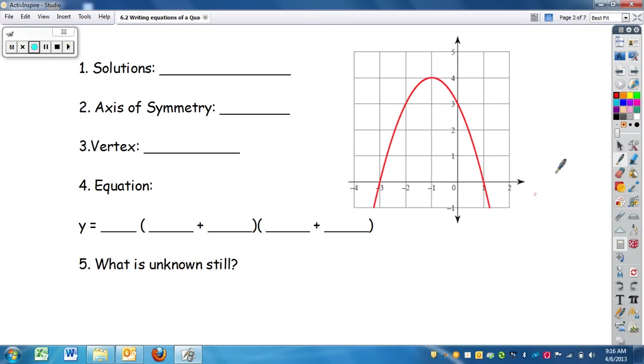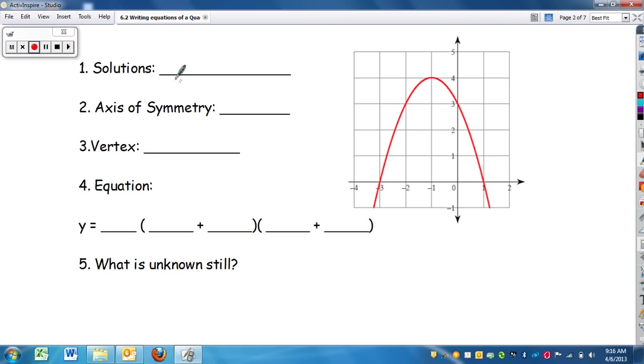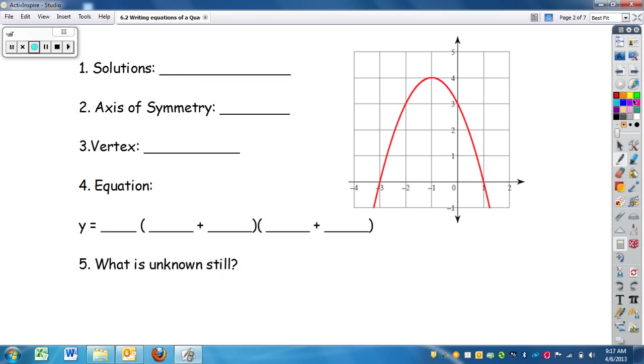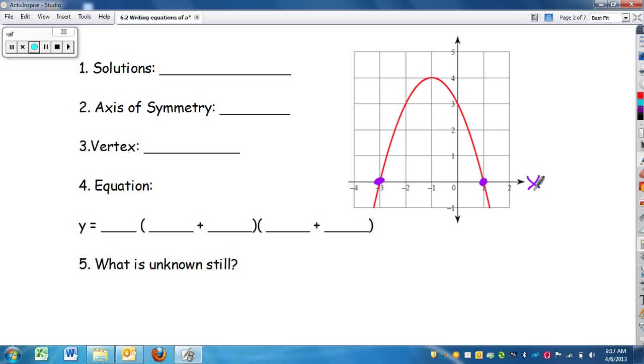So take a look at this graph. From here, we can gather this kind of information. We have our solutions, remember, your x-intercepts. So my two x-intercepts, where it crosses the x-axis, are at 1 and negative 3. The axis of symmetry, where it gets cut in half, which is right there, that happens at x equals negative 1. And remember, you have to have x equals, or I'll mark it wrong. We have the vertex, which is the highest or lowest point of the parabola. And in this case, this is a maximum, because it opens down. That happens at negative 1, 4.